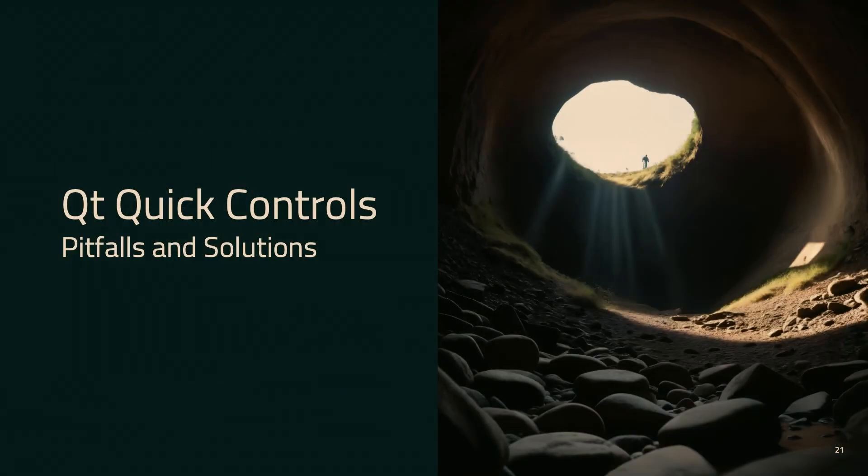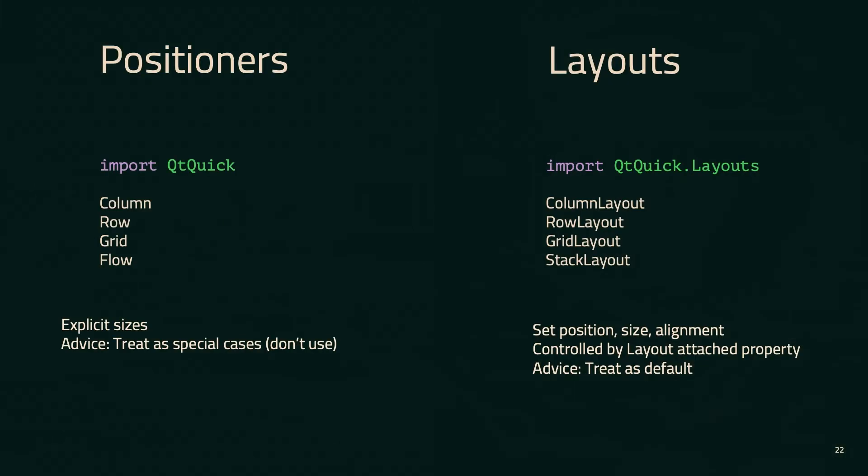Moving on to Qt Quick Controls-specific pitfalls and solutions — let's start with the confusion between positioners and layouts. I quite frequently see people using positioners when they absolutely should be using layouts. Positioners — column, row, grid — only handle position: where something should be located relative to something else. All sizes are explicit, there's no alignment, it's all manual, and generally speaking it's a special case in practice. You're going to want to use actual layouts — ColumnLayout, RowLayout, GridLayout under the Qt.Quick.Layouts import — because there you can get not only position but also size and alignment.